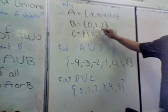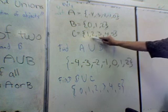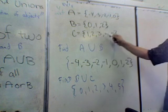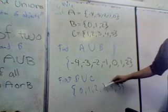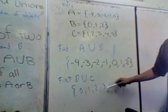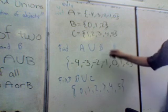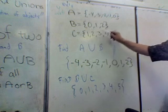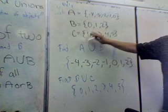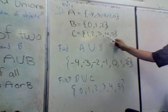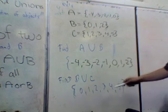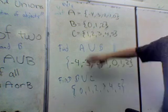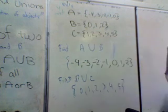As far as the union of B and C goes, again, you have two numbers in common: one and two. You include them, but you don't include them twice. So you write zero, one, two — don't include them twice — three, four, five. Zero, one, two, three, four, five. That's the union of B and C.